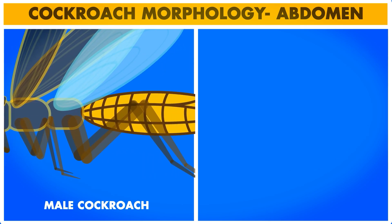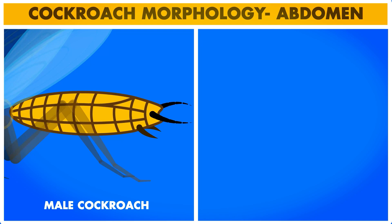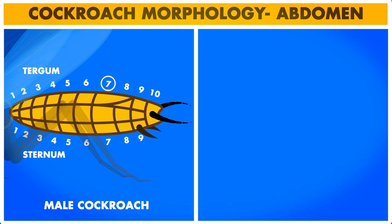In case of males, the 7th tergum covers the 8th tergum. Nine sternums are present in the abdomen but the sternum of the 10th segment is absent. All the sternums are visible in case of male abdomen.